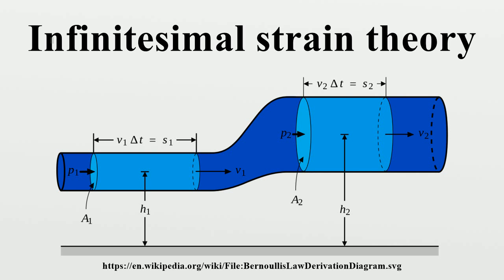This approach may also be called small deformation theory, small displacement theory, or small displacement gradient theory. It is contrasted with the finite strain theory where the opposite assumption is made. The infinitesimal strain theory is commonly adopted in civil and mechanical engineering for the stress analysis of structures built from relatively stiff elastic materials like concrete and steel, since a common goal in the design of such structures is to minimize their deformation under typical loads.